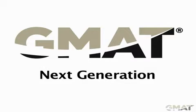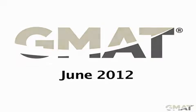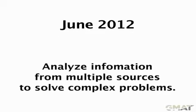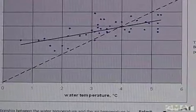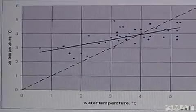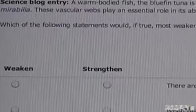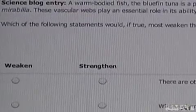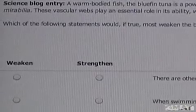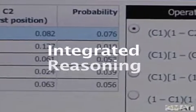Beginning in June 2012, the GMAT exam will include new interactive question types. These questions will require you to analyze information from multiple sources to solve complex problems. You will need to identify relationships between data points and interpret graphs, charts, and spreadsheets. You will also be required to recognize and evaluate trade-offs in given situations. Essentially, the GMAT will measure your integrated reasoning skills.